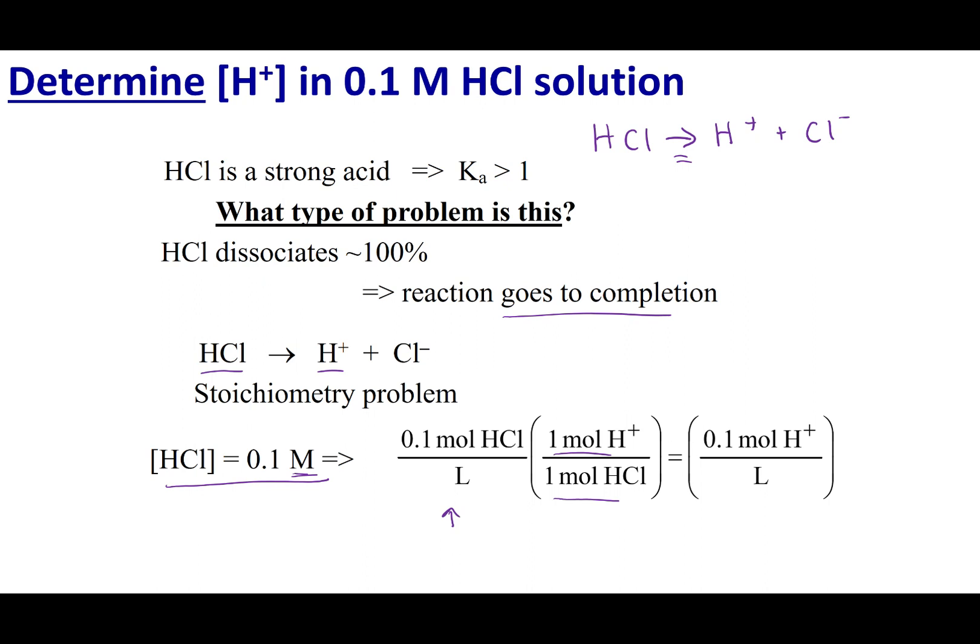So at the end of the day, I have 0.1 moles of H-plus in one liter, which gives me an H-plus concentration of 0.1 molar. You should be very comfortable with this because this is the stuff you just did in Chem 1A.